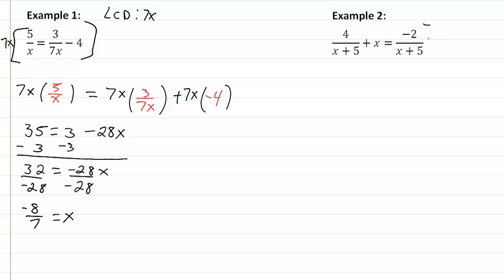So in example two, our LCD is x plus 5. I am not going to write this one out like I did the other one. We're going to get 4 plus x times x plus 5 equal to negative 2. So then we have 4 plus x squared plus 5x equal to negative 2.